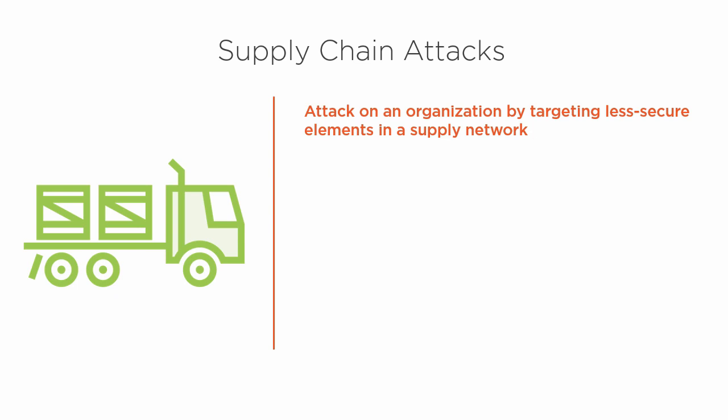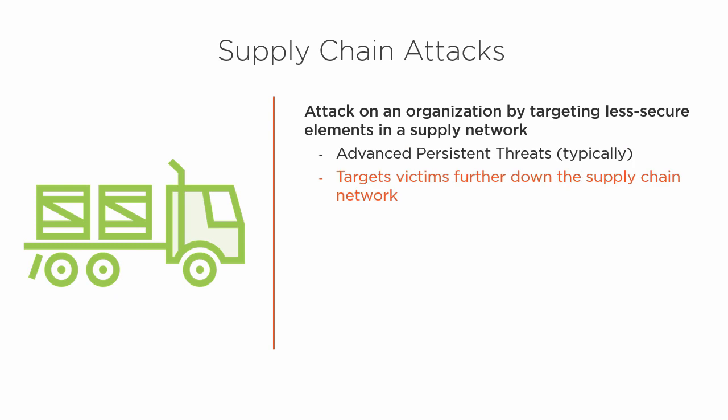Supply chain attacks use a similar methodology — it's an advanced persistent threat, typically. The goal is to target victims further down the supply chain network. Think of it as finding the weakest link in the chain. We infect that piece of the chain, inject malware, inject something that's capturing information or allowing us to get into the network further up the supply chain where it may not be as secure.